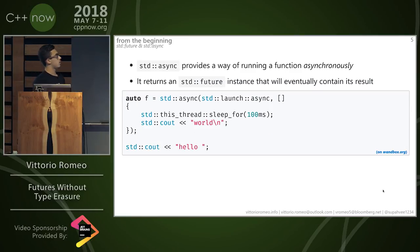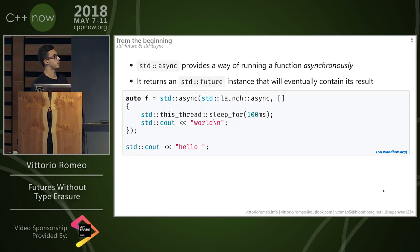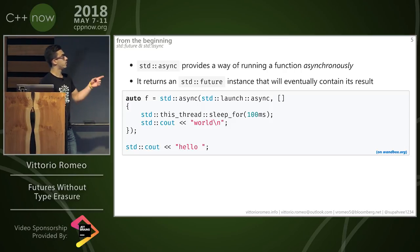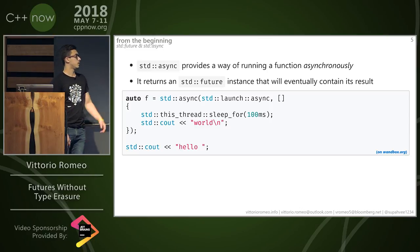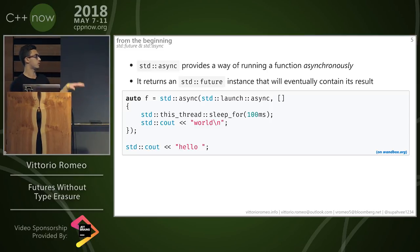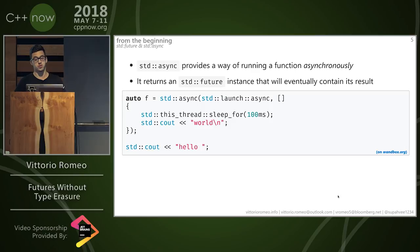Let's begin from std::future and try to understand why I wanted to do this, and if it's reasonable even with the upcoming changes to std::future that would introduce continuations. First of all, we have std::async, which provides a way of running a function asynchronously and returns an std::future instance that will eventually contain its result. For example, with std::async of launch::async, which guarantees the thing will run in the background, we can sleep and print out "world", assign that to a variable F, print out "hello", and this is guaranteed to print out "hello world".